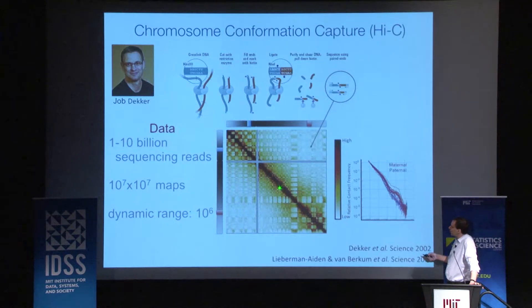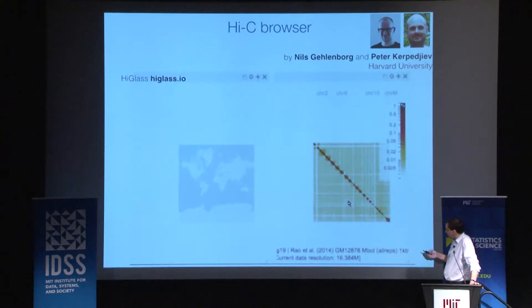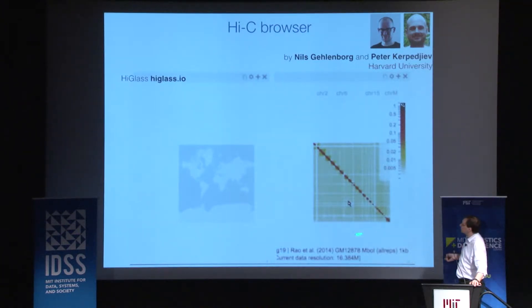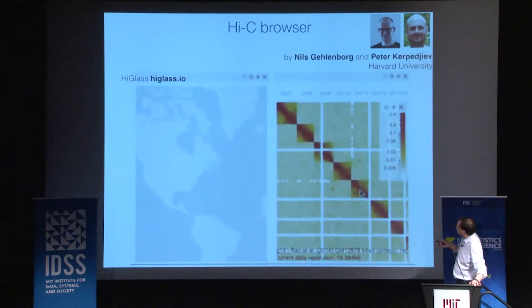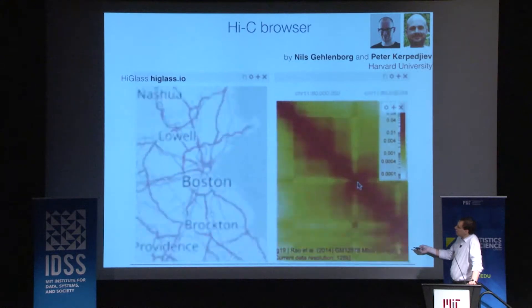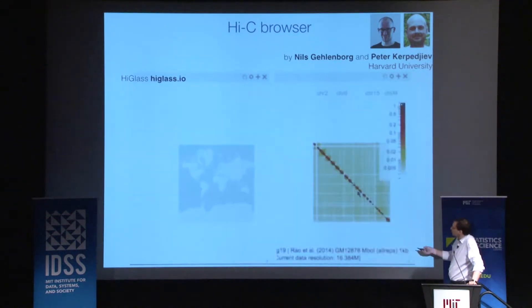The dynamic range of this method is six orders of magnitude in intensity — no color can actually capture that. I'll show you how it looks in the Hi-C browser recently developed by Peter Gelenborg, Niels Gelenborg, and Peter Karpediev at Harvard. This browser is actually better and faster than Google Maps — better because you can see several views at the same time. I can browse a map on the left and browse Hi-C data on the right.